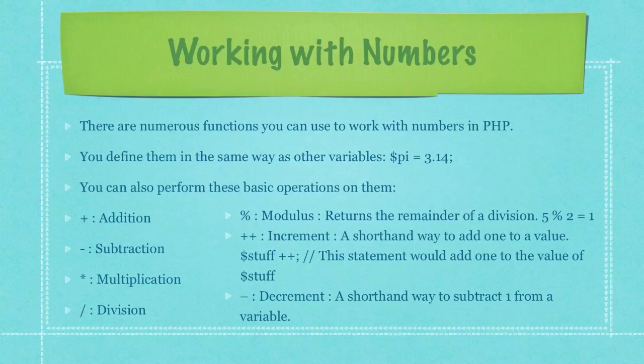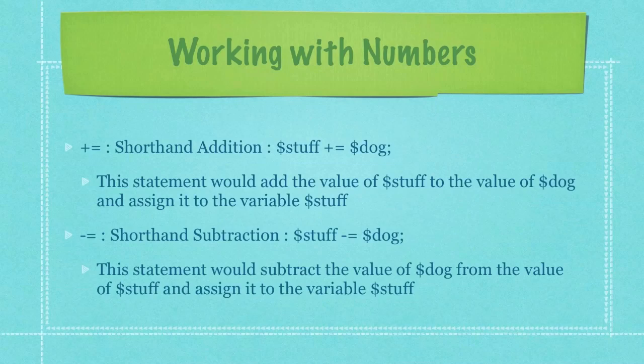There are numerous functions you can use to work with numbers in PHP. You define them in the same way as other variables — for this instance I am defining pi. You can also perform these basic operations on them: addition, subtraction, multiplication, division, modulus which returns the remainder of a division, increment which is a shorthand way to add one to a value, and decrement, a shorthand way to subtract one from a value. This statement would add the value of 'stuff' to the value of 'dog' and assign it to the variable 'stuff.' And in the second example, this statement would subtract the value of 'dog' from the value of 'stuff' and assign it to the variable 'stuff.'